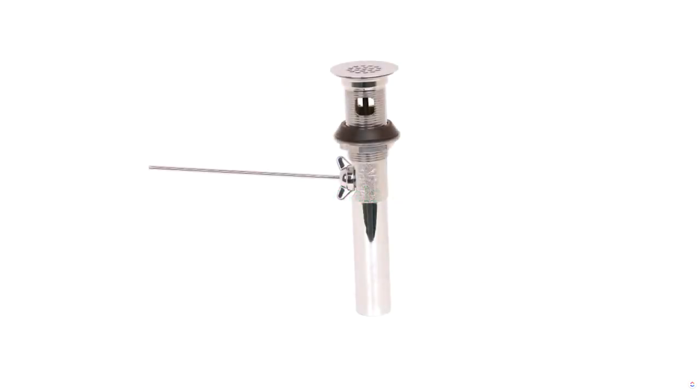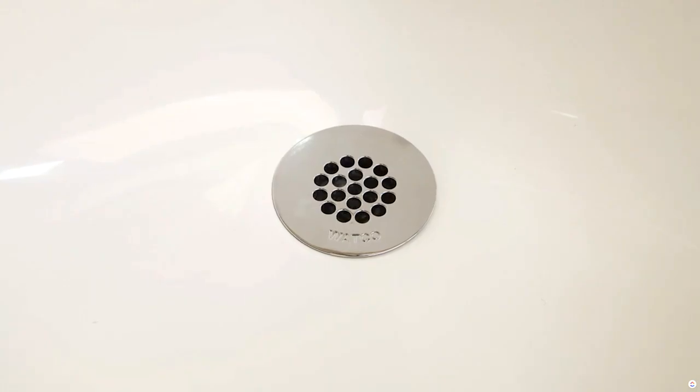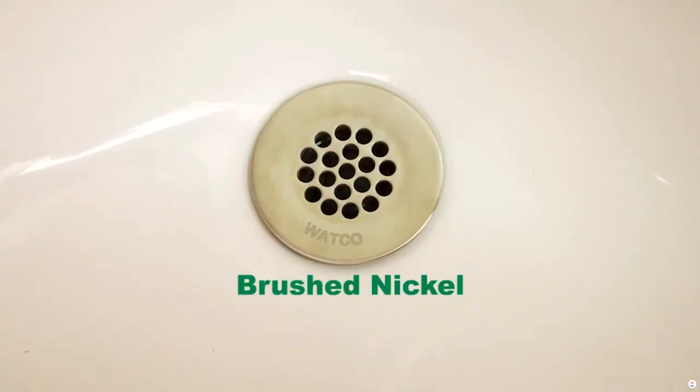The ideal lav is available in cast brass or plastic. The grid strainer that is included with the ideal lav is available in chrome or brushed nickel.